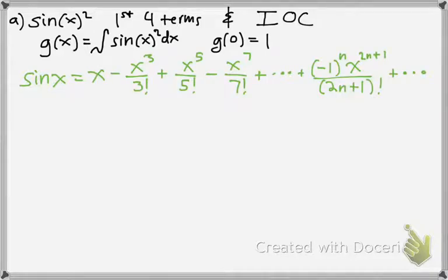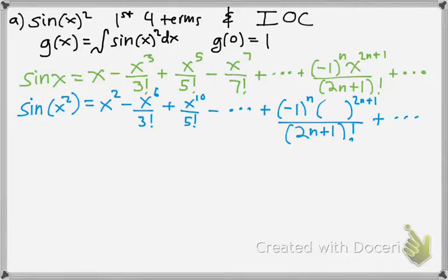So that means if we wanted to find what sin(x²) was, everywhere you see an x, you just replace it with an x². So all I did was wherever there was an x, you put an x², so 3 times 2 would give you 6, and 5 times 2 would give you 10. Just exponent basic rules.